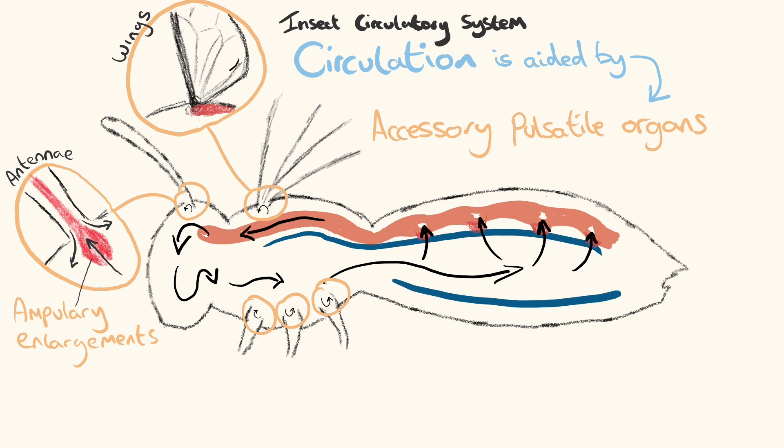These aspirate haemolymph from the posterior veins of the wings, thereby forcing the movement of haemolymph into the anterior veins of the wings. This is further aided by the exoskeleton's raised portions creating pumping space, acting as a pump to draw haemolymph from the posterior wing veins back into the body.